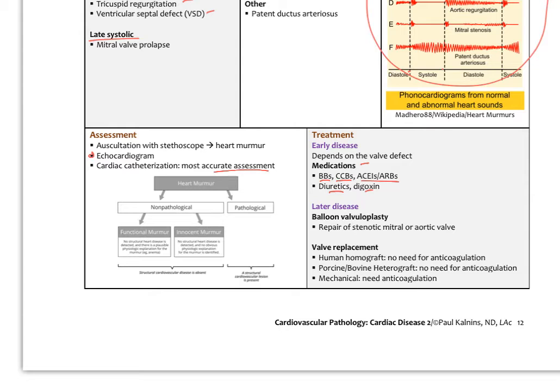Human homografts — human valves — are beneficial because the recipient will not need anticoagulation. Whenever a foreign body is placed in the blood's path, like mechanical valves, it can trigger platelet activation, requiring antiplatelet or anticoagulant medication. Pig or bovine heterograft valves also don't require anticoagulation. Mechanical valves, probably easiest to place, will require some degree of anticoagulation. All valve types have advantages and disadvantages for end-stage treatment.